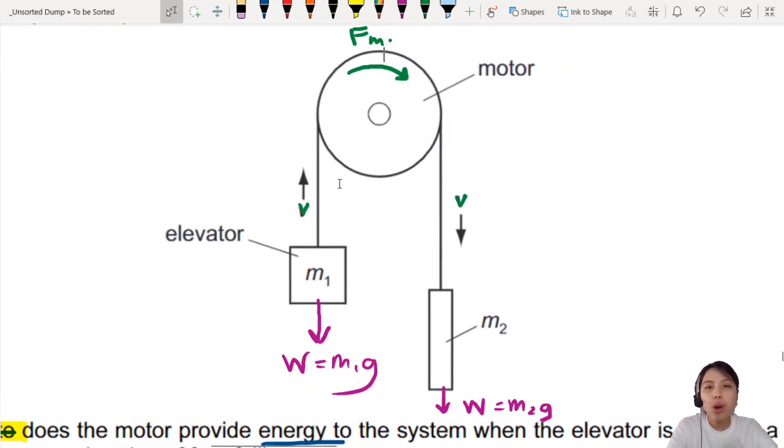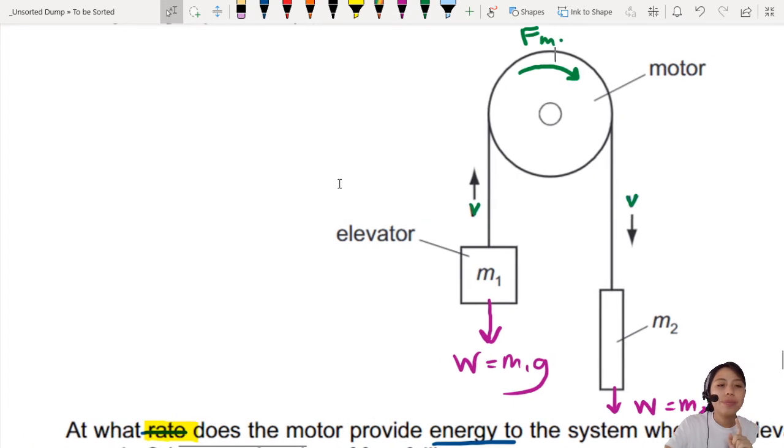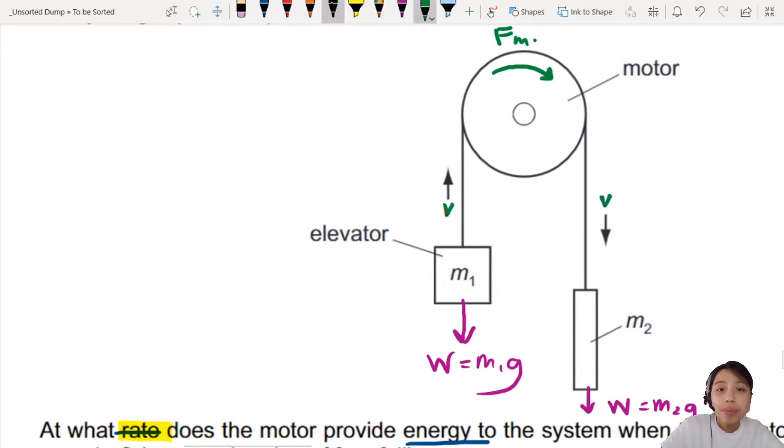We need to draw a free body diagram of one of the objects in this system. I'm going to pick the elevator. So if this is your elevator box, M1. There's going to be some force pulling it up. What's pulling it up? The rope, the string, the tension.